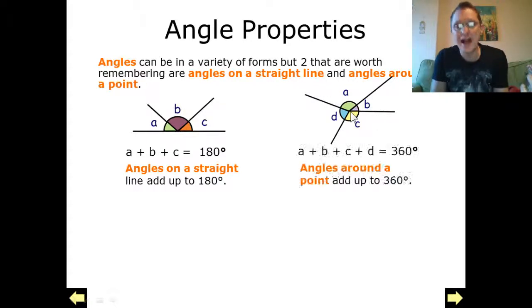Exactly the same for this. We've got angles around the points which add up to 360 degrees. So here angle A plus angle B plus angle C plus angle D would give me 360 degrees. If I had these three angles, I could work out what angle D is from that by subtracting these away from 360 degrees.